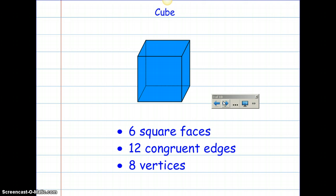Next, we have a cube. The cube is very similar to the rectangular prism and it also has six faces. But these are square faces this time. And it has 12 congruent edges and eight vertices.